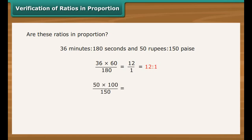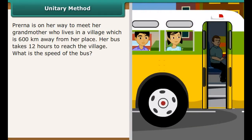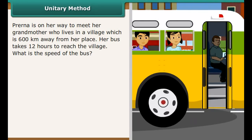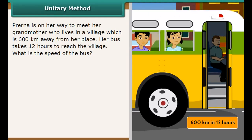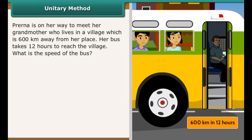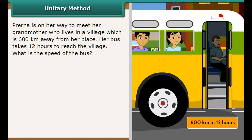Prerna is on her way to meet her grandmother who lives 600 km away. Her bus takes 12 hours to reach the village. What is the speed of the bus? Speed is the distance covered in one hour. Distance covered in 12 hours is 600 km. Distance covered in 1 hour is 600 divided by 12, which equals 50. Therefore, the speed of the bus is 50 km per hour.